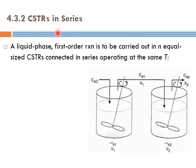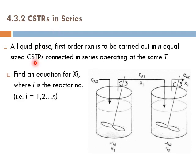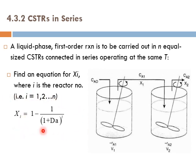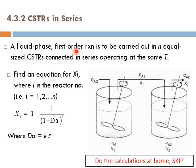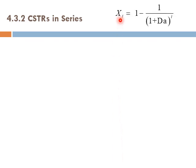Now let's talk about CSTRs in series. A liquid phase first-order reaction is carried out in N equal-sized CSTRs connected in series operating at the same temperature. We need to find an equation for X_i, where i is the reactor number — reactor 1, reactor 2, reactor 3, up to reactor N. You can derive this equation from the design equation at home. The Damköhler number for a first-order reaction is k times τ. Working through the calculation, you arrive at the equation for X_i at the exit of each reactor.